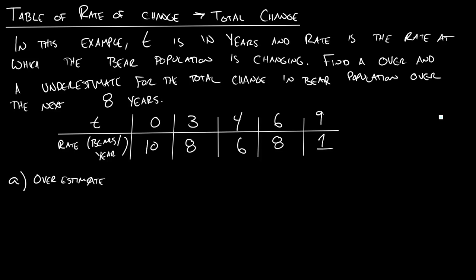Here we have a table of rate of change, and we're going to try to figure out what the total change is. This is very similar to when we were looking at a table of velocities and going towards distance. It's just a slightly different kind of interpretation. So in this example, we have t in years, and this rate down here, this is the rate of change of bears per year. So what this 0, 10 is saying is that at time equals 0, the number of bears is increasing by 10 bears per year.